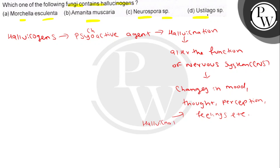Now, normally some mushrooms can cause hallucination, like cannabinoid drugs also cause hallucination, LSD also causes hallucination. Cocaine also causes hallucination. Like that, mushrooms also cause hallucination — like Datura, Arthropoda, Belladonna. These are some plants that cause hallucination, and mushrooms also share this property.